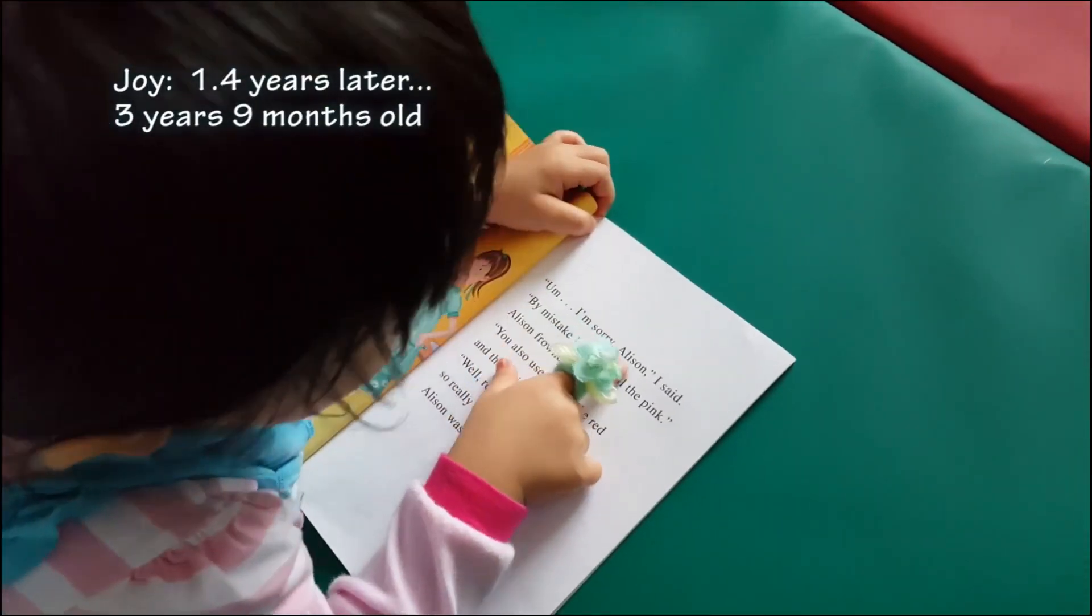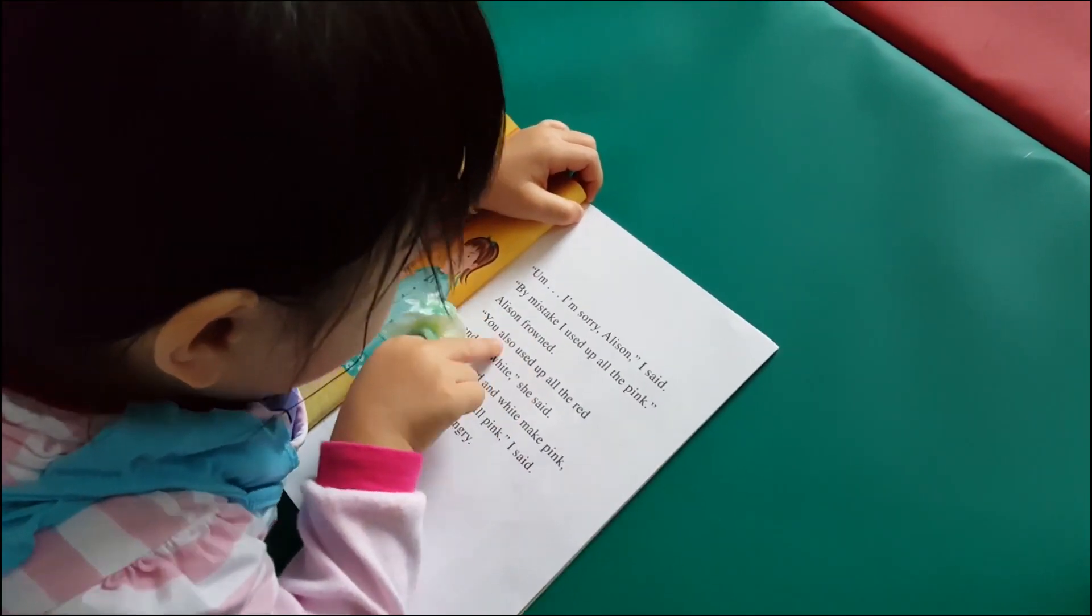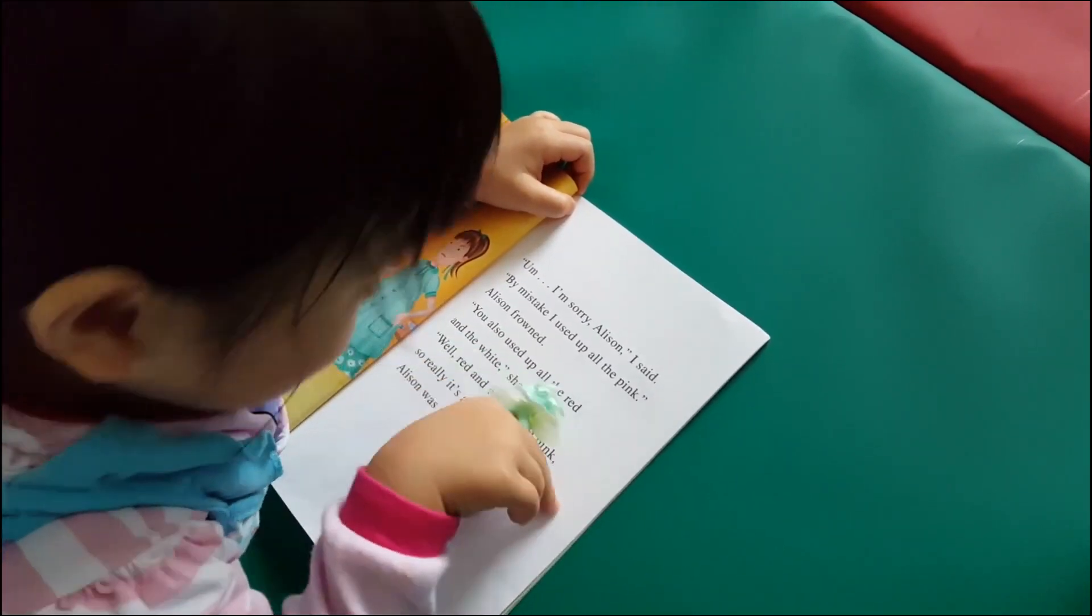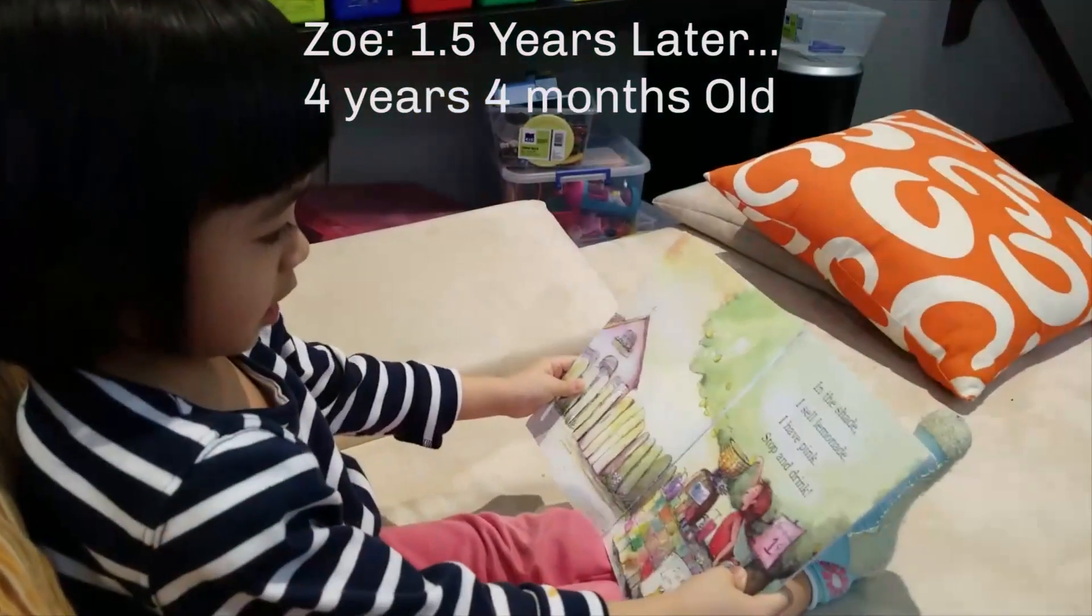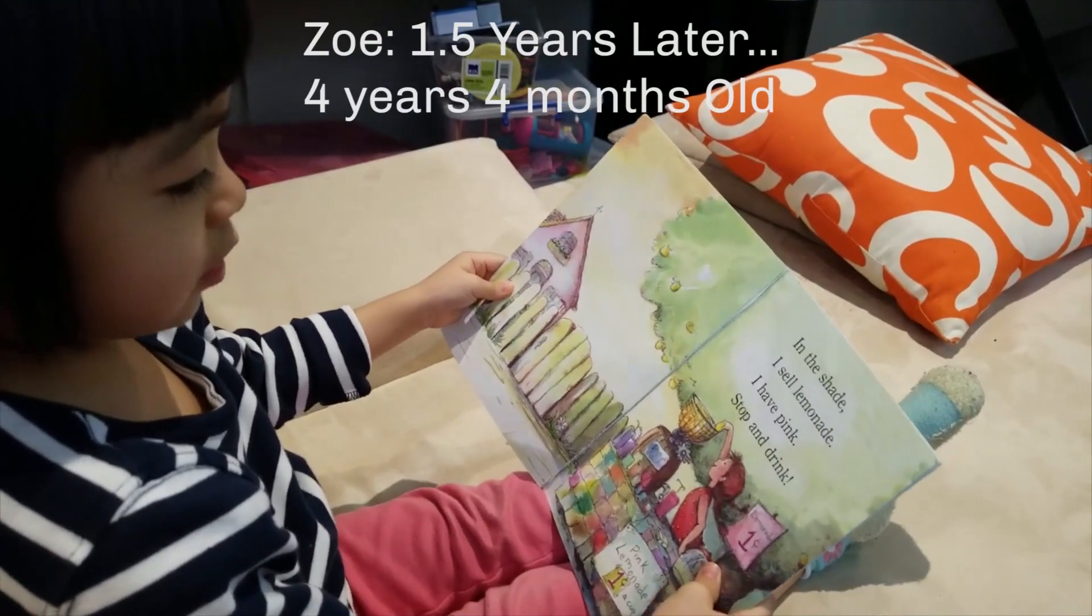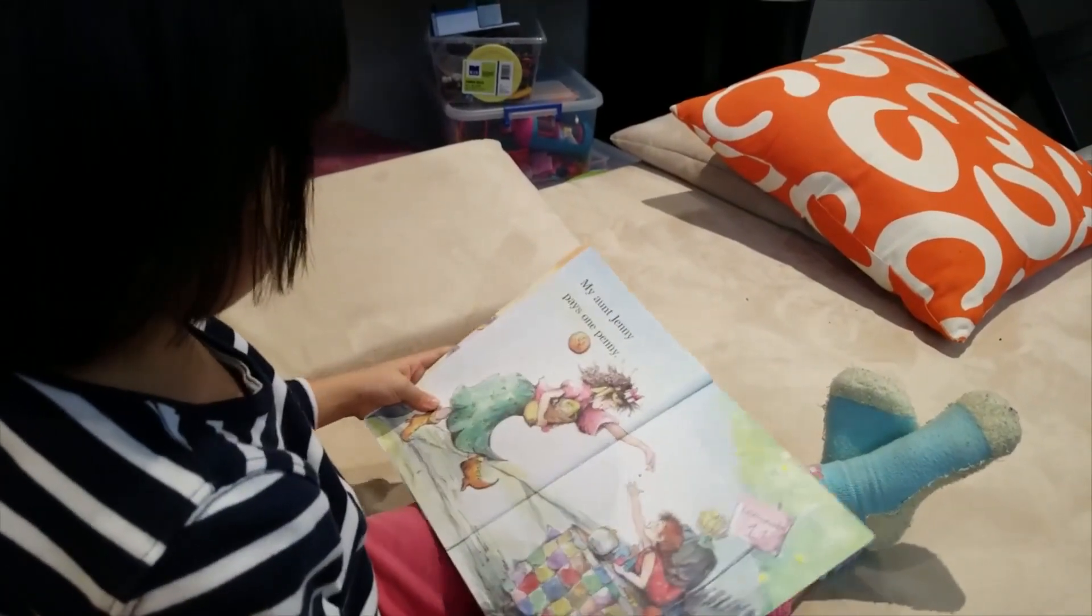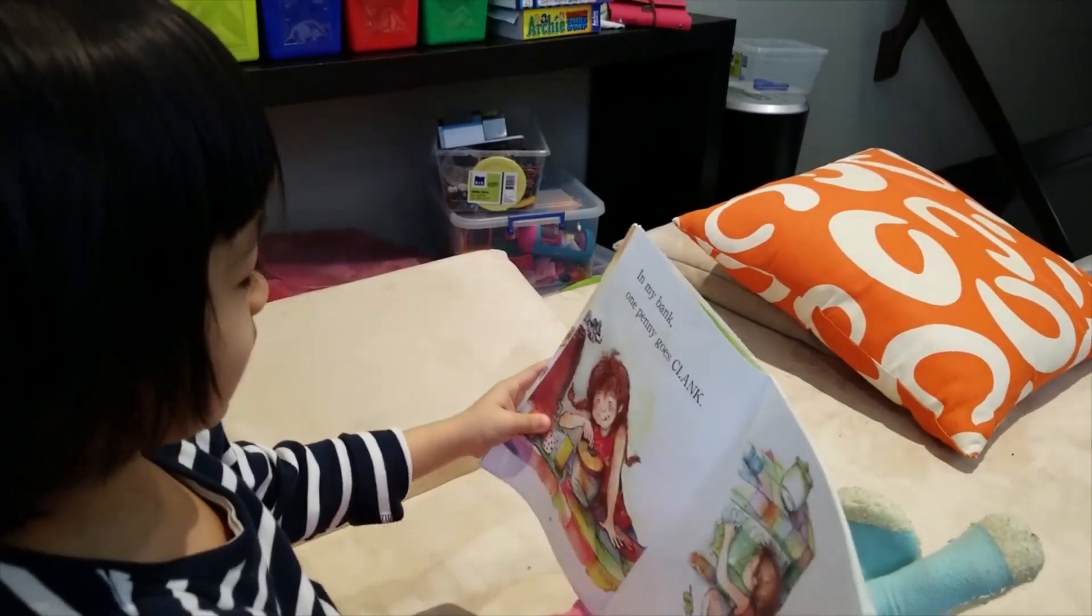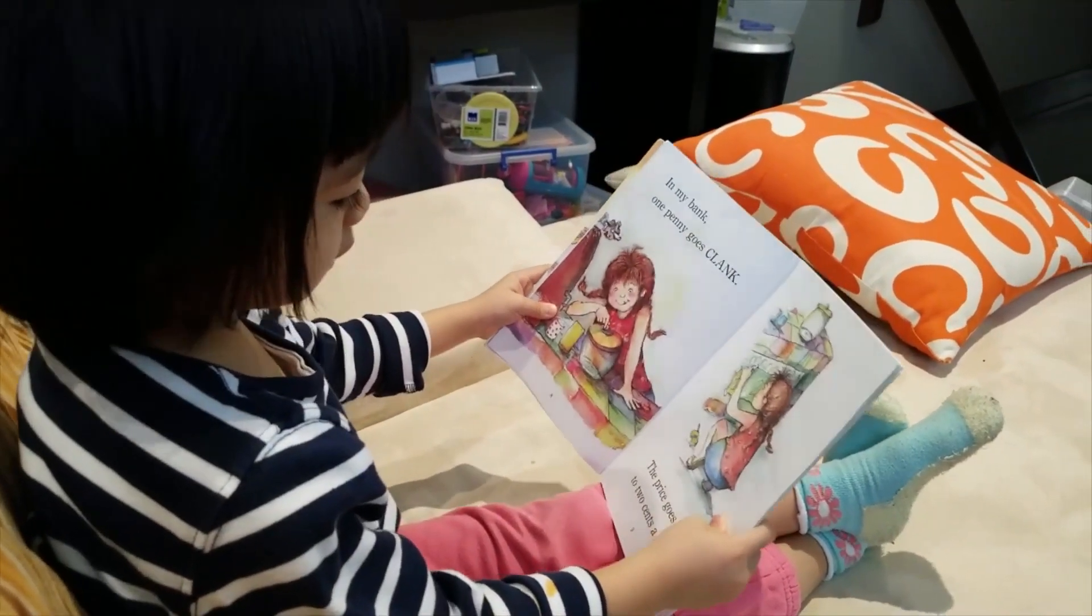Oh, I'm sorry. Yes, as I said, my lipstick. I used up all the pink. As I found, you also used up all the red and white, she says. Red and white make pink. So really, it's all pink, I said. As I was angry. In the shade, I said, woman needs, I have pink. I have pink lipstick and drink. My aunt Jenny pays one penny. In my bank, one penny goes clink. The price goes up to two cents a cup.